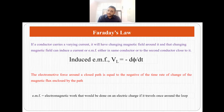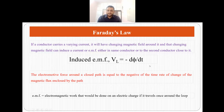This induced EMF is represented by Faraday's law, which states that the induced EMF V_L equals minus dΦ/dt — that means the electromotive force around a closed path is equal to the negative of the time rate of change of magnetic flux enclosed by the path.